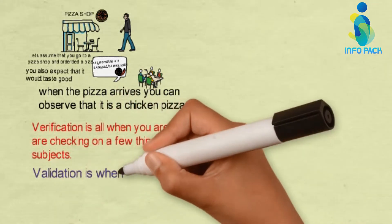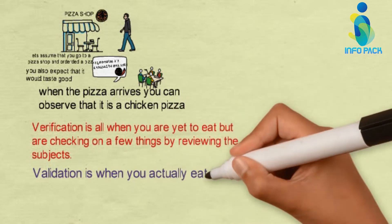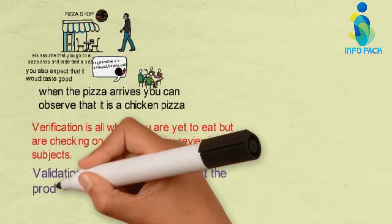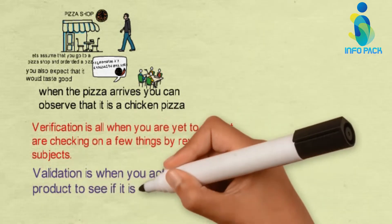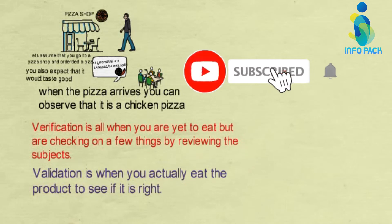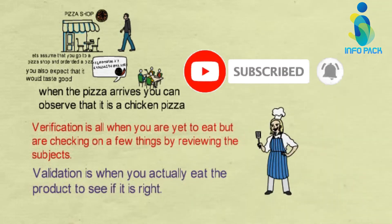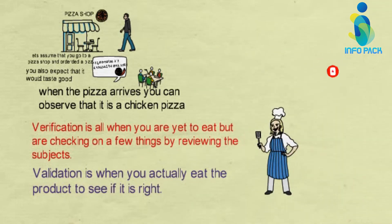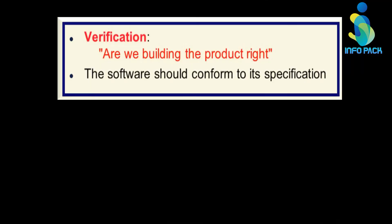In validation, when the product arrives, you see whether it is right or not. Validation means when you actually eat the product to see if it is right or not.